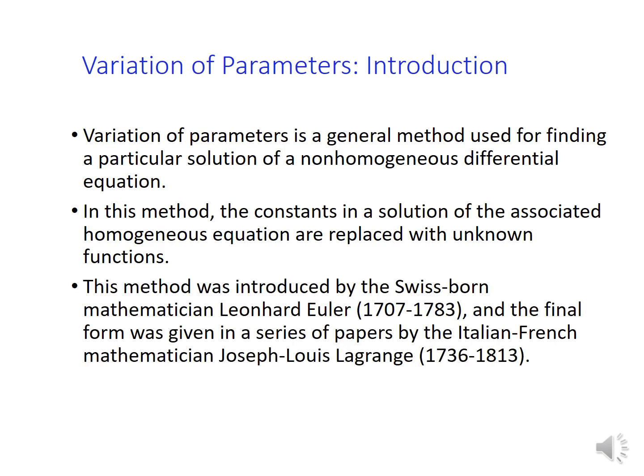But before, let me mention here the names of two important mathematicians. This method, the variation of parameters, was introduced in the 18th century by Leonard Euler, and the final form was given by Joseph-Louis Lagrange.